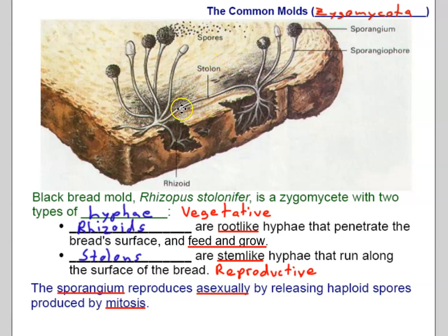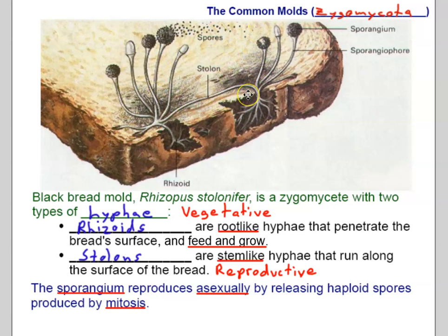Another form of asexual reproduction occurs where an individual sends out a rhizostolon — a horizontal hypha running along the surface of the bread. When it reaches a new area, it puts down rhizoids and puts up sporangiophores. This continues as another stolon might spread further, allowing the mold to quickly spread across the bread asexually. Everything inside the bread is vegetative hyphae; everything on the surface that you can see is reproductive hyphae.